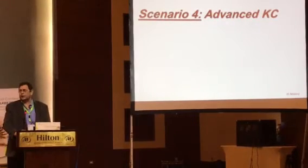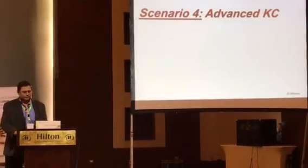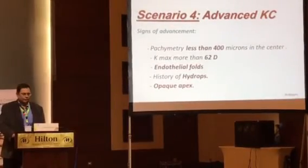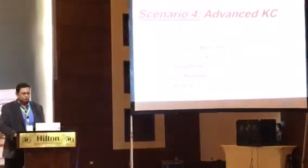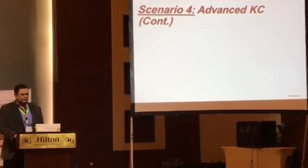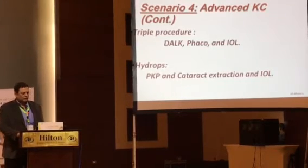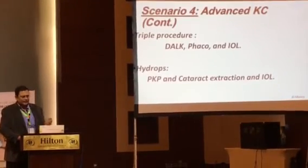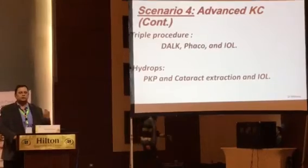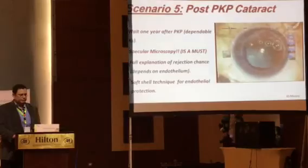Scenario four: advanced keratoconus. The signs of advancement include pachymetry less than 400 microns, Kmax past 62 diopters, Vogt's striae, hydrops, or Bowman's layer breaks. Here you can perform the triple procedure — deep anterior lamellar keratoplasty with a phakic IOL — or if there is hydrops, perform PKP and cataract extraction with IOL depending on the fellow eye. As we heard, you can also do PKP first, then cataract surgery later.